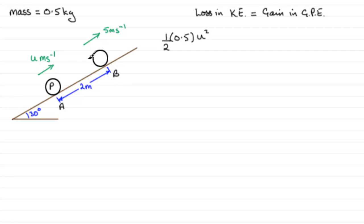Now we minus the kinetic energy up at B, so that's again ½ times 0.5 times v², where v is 5, so we've got 5². That's our loss in kinetic energy, and this equals the gain in gravitational potential energy.